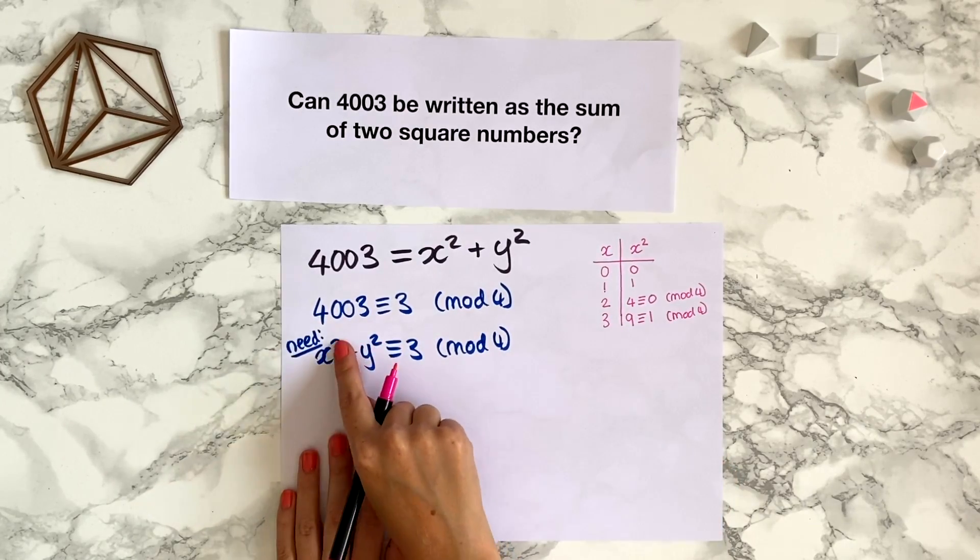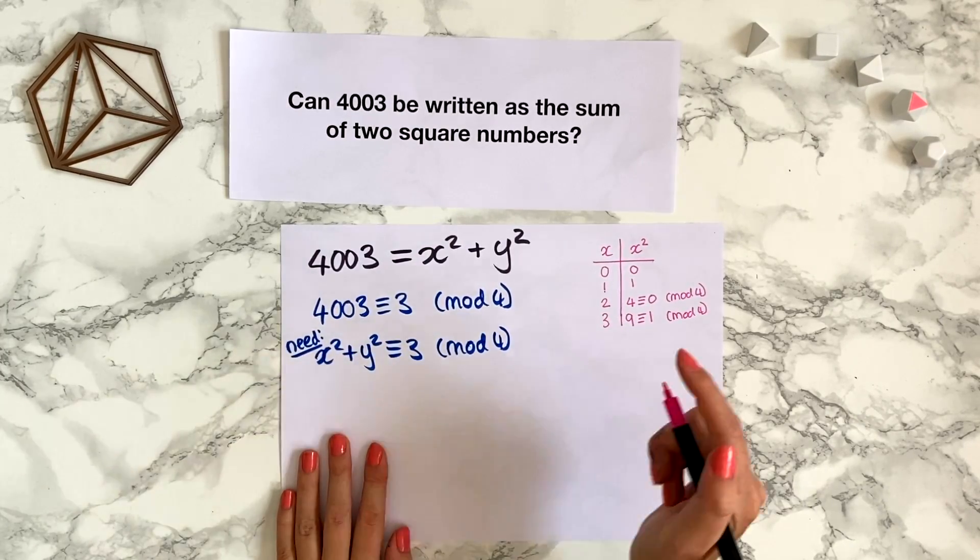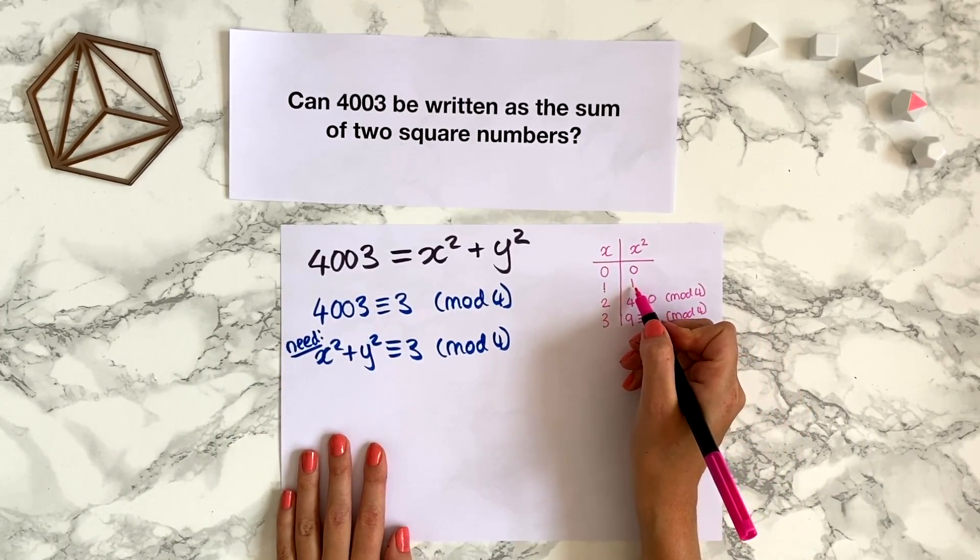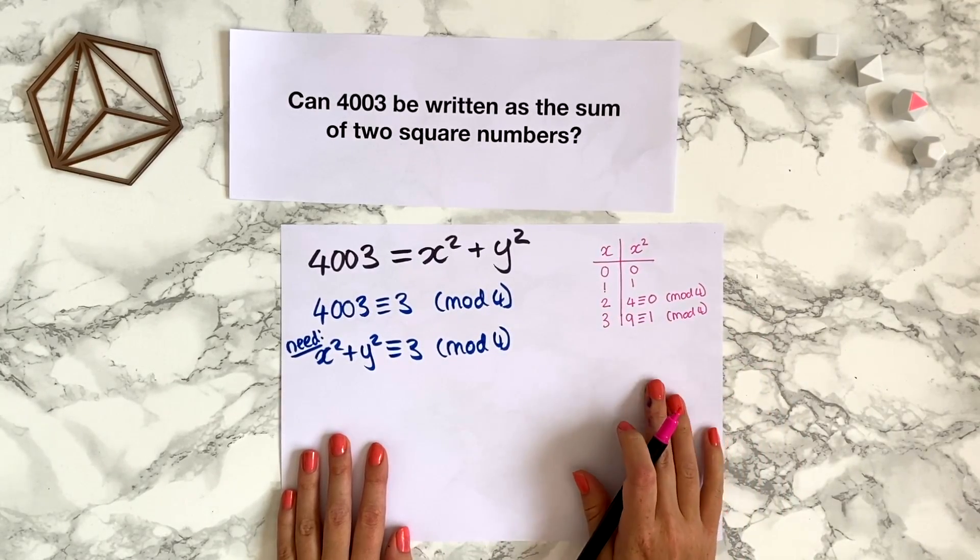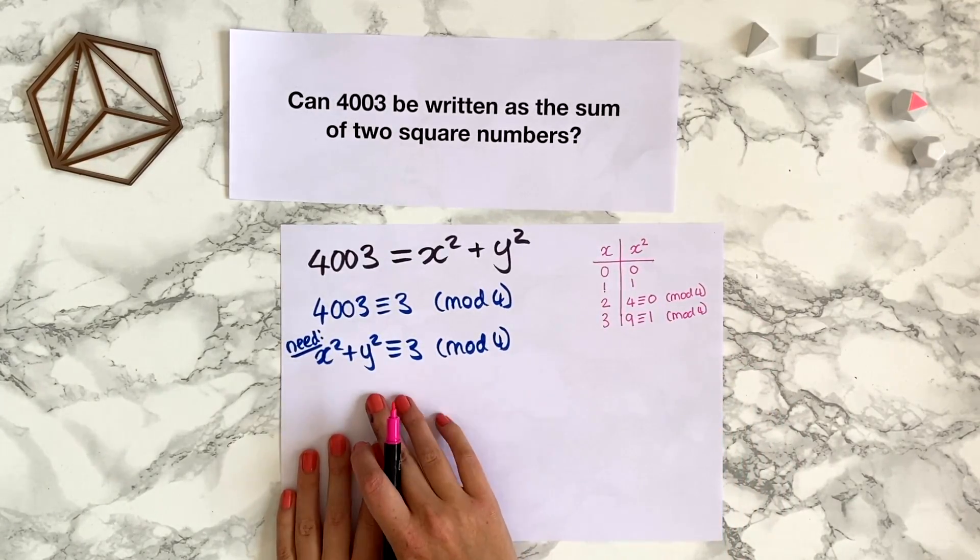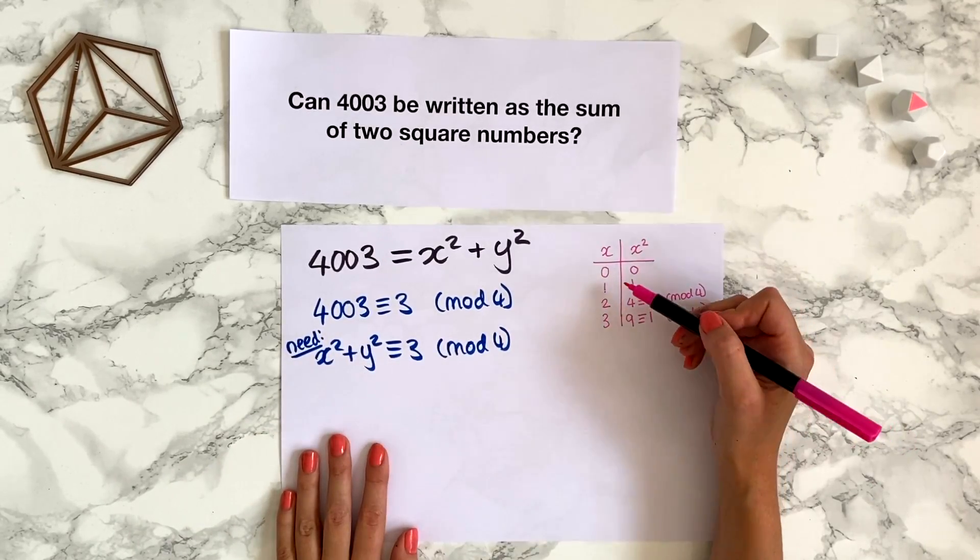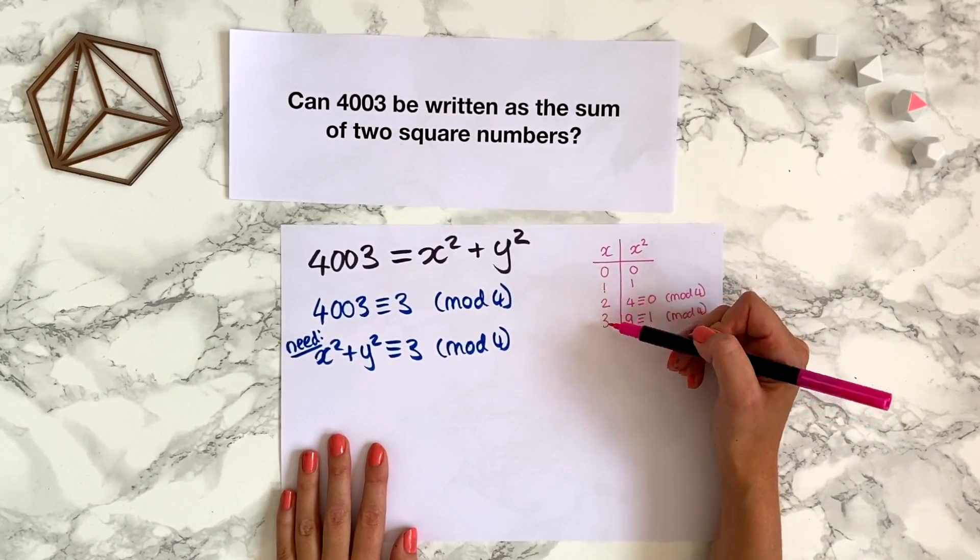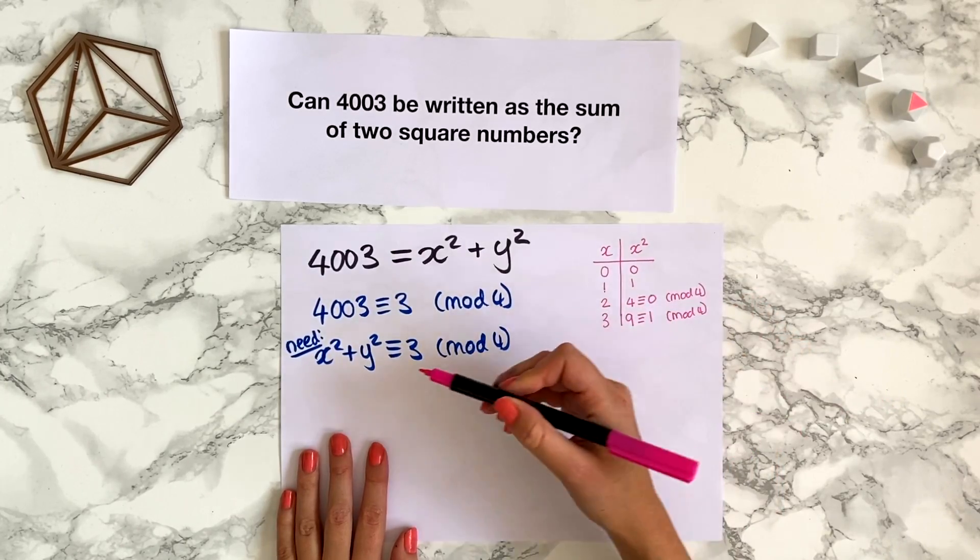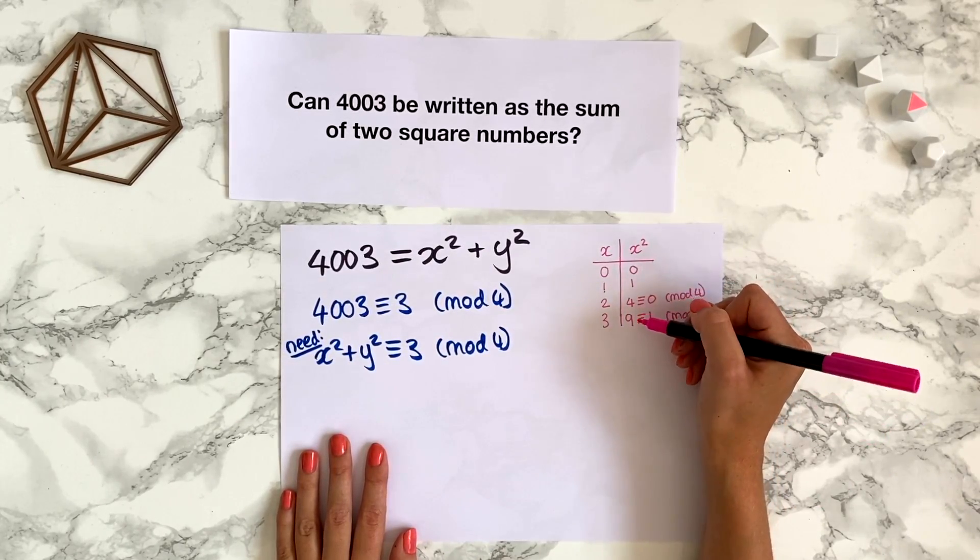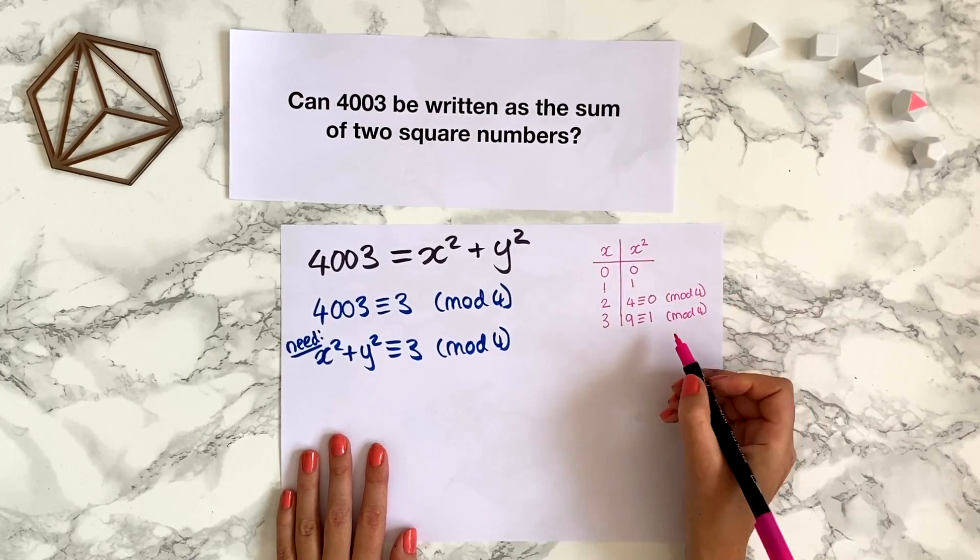So that means in modulo 4, this x squared can either be 0 or 1. It can't take any other values modulo 4. But this is exactly the same as if we did it for y. If you put y here and y squared here, y can also only take the values 0, 1, 2, and 3 in modulo 4. So y squared can also only take values 0 or 1 modulo 4.